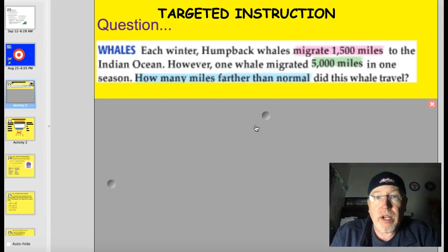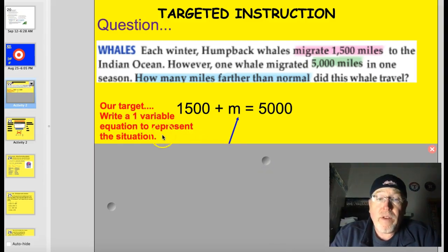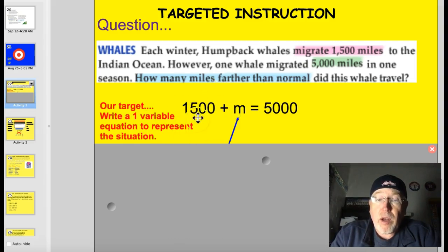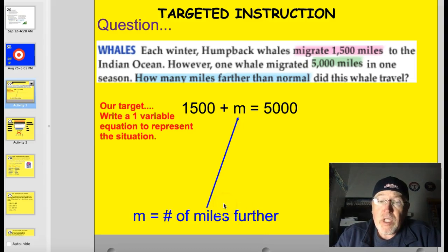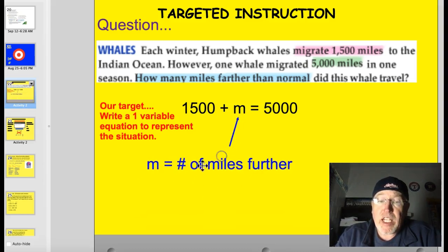Tonight you're going to be given a word problem like this, and instead of solving it, you're gonna have to write a one-variable equation that represents it. I'll teach you how to write it in the proper form. I'll show you a couple different strategies that will make this rather difficult skill a little bit more manageable. Each winter humpback whales migrate 1,500 miles to the Indian Ocean. However, one whale migrated 5,000 miles in one season. How many miles farther than normal did this whale travel? Write one-variable equation to represent the situation. You don't need to solve the problem. You just need to write the equation, or if it's a multiple choice test, choose the correct equation.